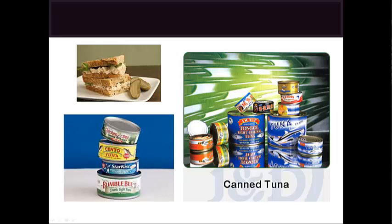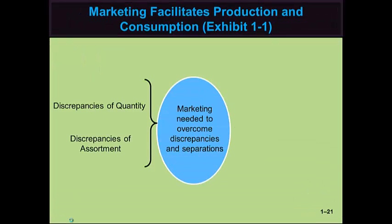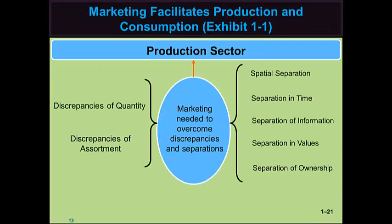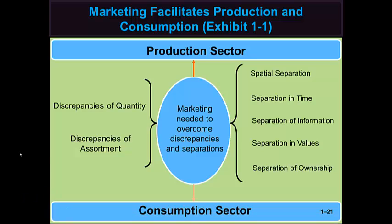The can of tuna I bought that week was probably part of a production run from 2010. The customer service agent also bridged the gap in information — obviously, the producer has more information regarding my tuna than I do, and marketing helps make sure I get that information.